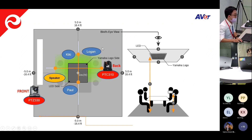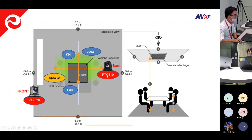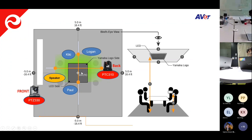From the first-eye view of the room setup, we have one RMCG microphone installed on the ceiling. I'm sitting here, Kiki is sitting there, and Logan is sitting here. We have a front camera PTC 330 and a back camera PTC 310 - two cameras with one microphone. There is also a whiteboard.